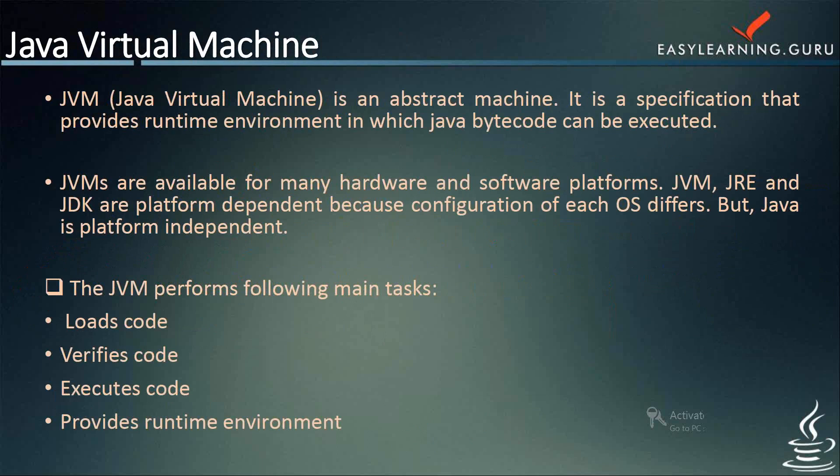Now, what is JVM? JVM is an abstract machine — it is a specification that provides the runtime environment in which Java bytecode can be executed. JVMs are available for many hardware and software platforms. However, JVM, JRE, and JDK are platform dependent because the configuration for each operating system differs, but Java itself is platform independent. The implementation of JVM is also actively released by companies besides Sun Microsystems. The main tasks performed by JVM include loading the code, verifying the code, executing the code, and providing the runtime environment.